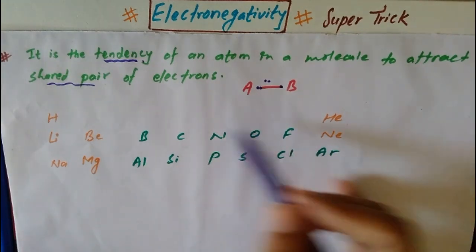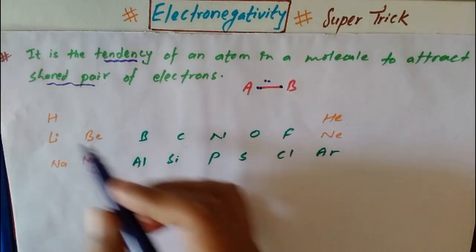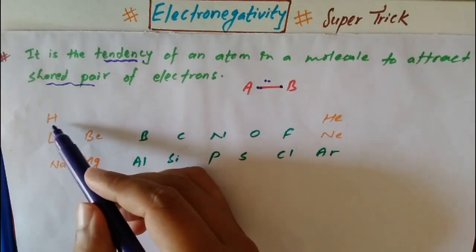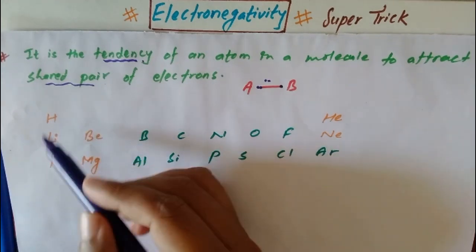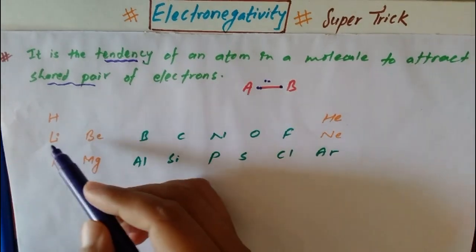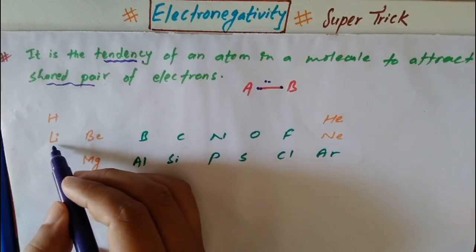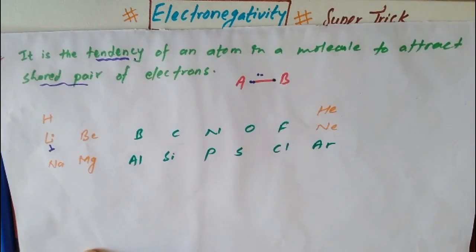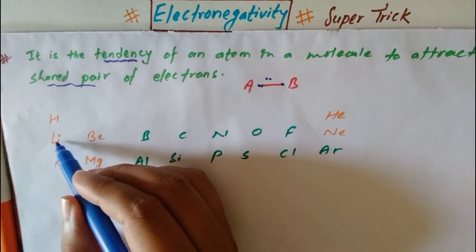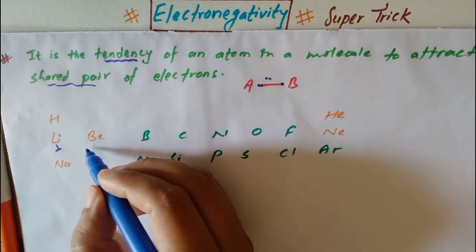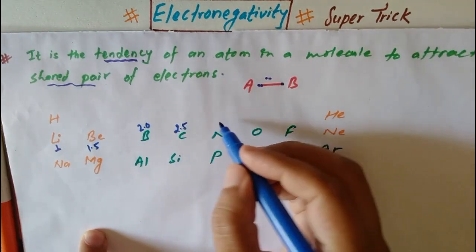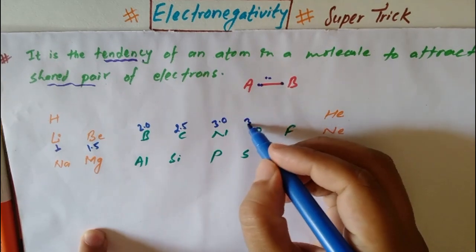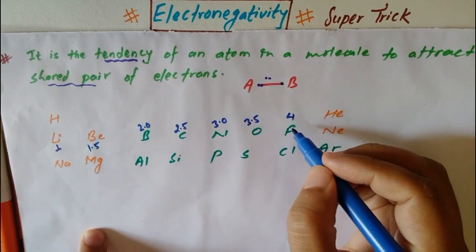Now I am going to study this atom — its electronegativity. How do we start? In our periodic table, lithium is the first metal. Electronegativity of lithium is 1.0. Beryllium is 1.5. Boron is 2.0. Carbon is 2.5. Nitrogen is 3.0. Oxygen is 3.5. The highest, fluorine, is 4.0.